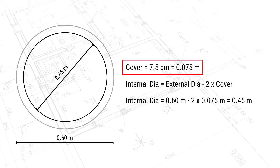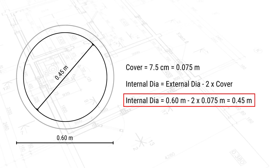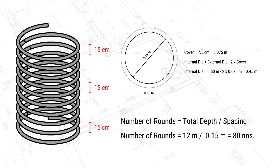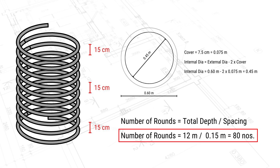To find the diameter of the spiral reinforcement, deduct two covers from the pile diameter: 0.6 m − 2 × 0.075 m = 0.45 m. Then calculate the number of rounds by dividing the pile depth by the spacing: 12 ÷ 0.15 = 80 rounds of spiral reinforcement.